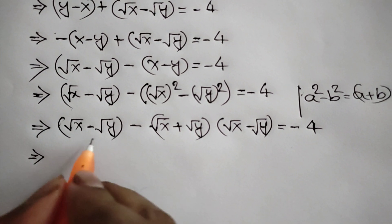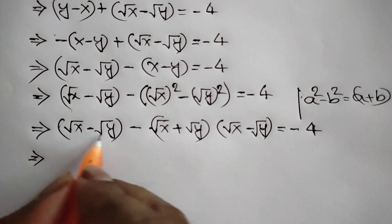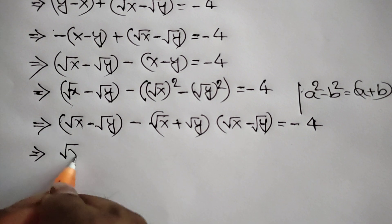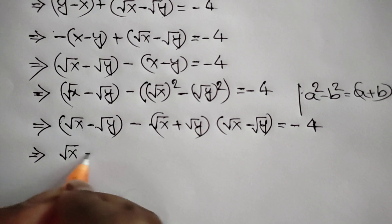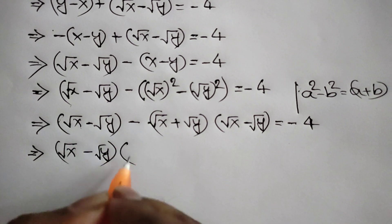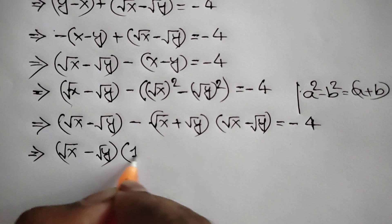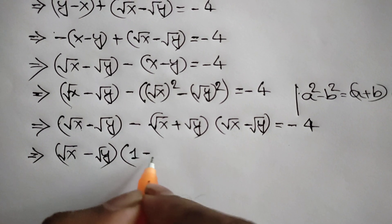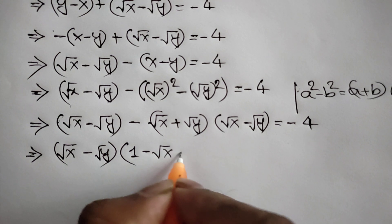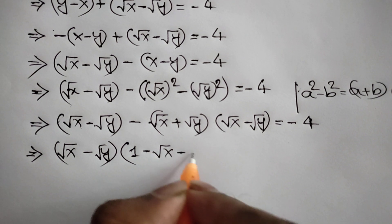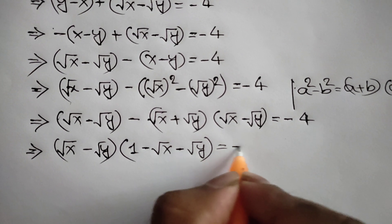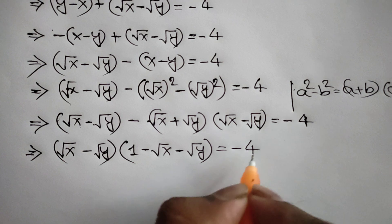Now taking square root of x minus square root of y as common, we will get square root of x minus square root of y times 1 minus square root of x plus square root of y is equal to negative 4.